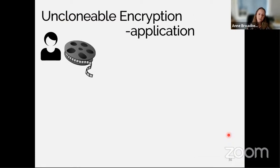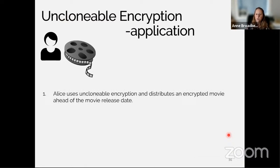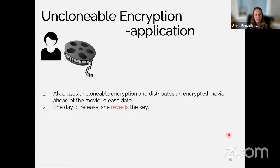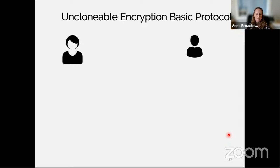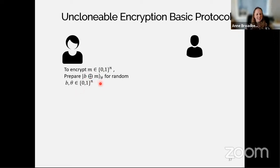Why would you want to use unclonable encryption? Here's one application: Alice could use unclonable encryption to distribute an encrypted movie ahead of the release date, sending encrypted copies to movie theaters. On the day of release she reveals the key, and thanks to unclonable encryption she's sure that at most one recipient can decrypt the movie. After the key is revealed, nothing can prevent a classical copy, but while it's still quantum we can inherently prevent copying of the message.